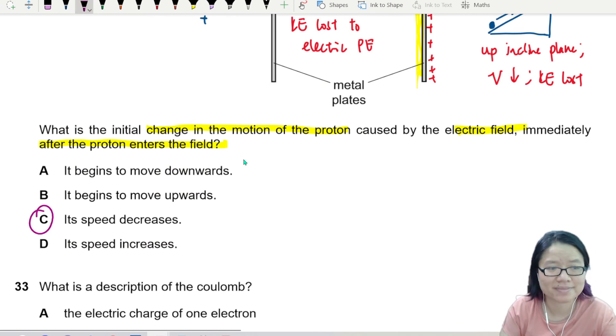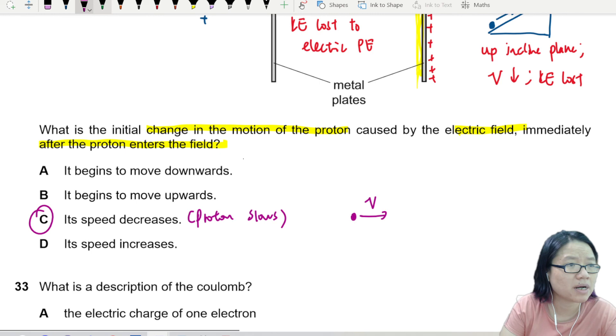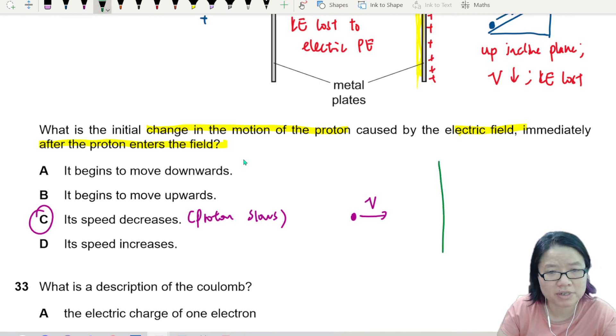Its speed decreases. Proton slows down. Because the proton wants to move in this direction. But the electric force due to the positive plate, or the row of positive, pushes it back. The electric force is here. It will slow down.